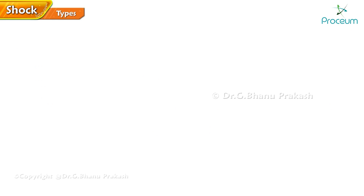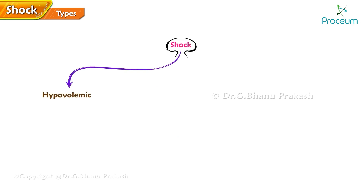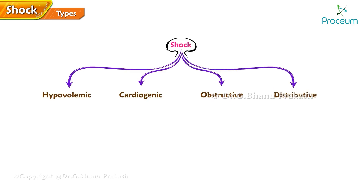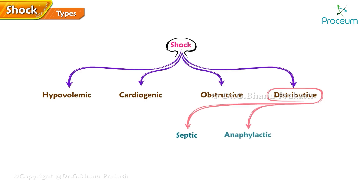The main types of shock include hypovolemic shock, cardiogenic shock, obstructive shock, and distributive shock. The main types of distributive shock include septic shock, anaphylactic shock, and neurogenic shock.